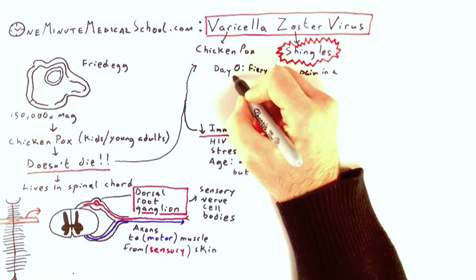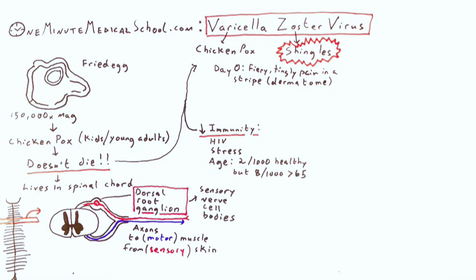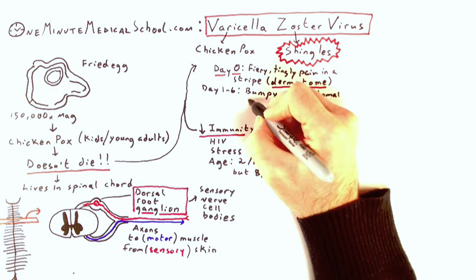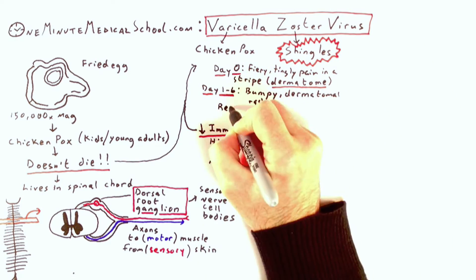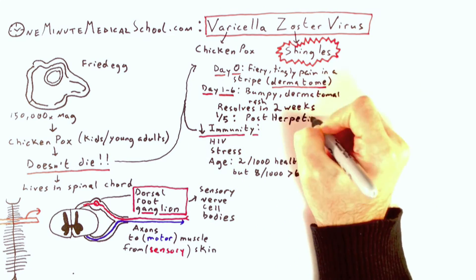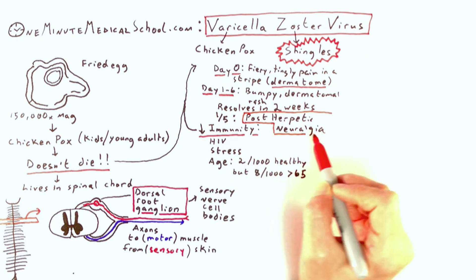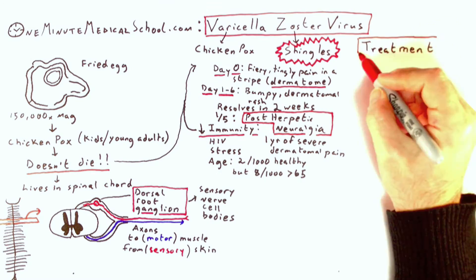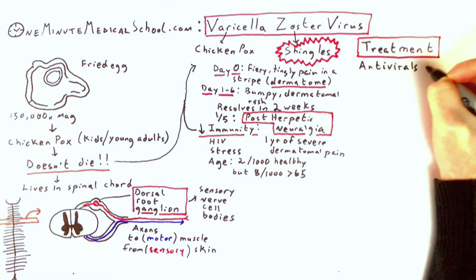It starts with a fiery, tingly pain in a stripe or dermatome. Day 1 to 6 leads to the bumpy rash. It resolves in 2 weeks, but 20% go into post-herpetic neuralgia, which is a year of severe pain, so we treat aggressively.